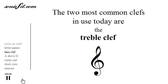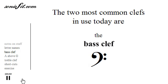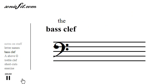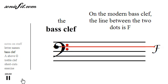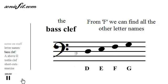The two most common clefs in use today are the treble clef for higher notes and the bass clef for lower notes. We'll start with the bass clef. It originated by putting an F on the staff to show where F is, and the two lines that make the top part of the F would be placed on either side of the line that is F. Today it's the two dots on the bass clef. From that line we can find all the other notes.